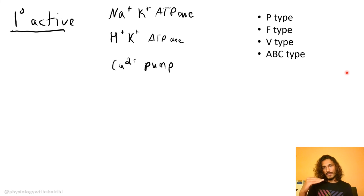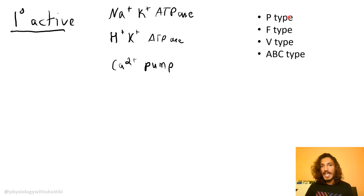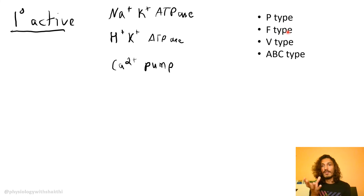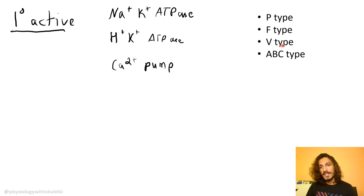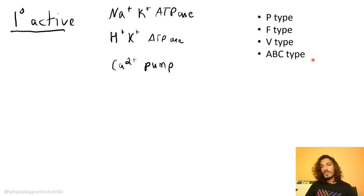For primary active transport, the most important example is sodium-potassium ATPase. Another is hydrogen-potassium ATPase — the proton pump in the stomach for acid secretion. Then there is the calcium pump, SERCA (sarcoplasmic/endoplasmic reticulum calcium ATPase). At a higher level, these channels are classified as P-type (e.g., Na/K ATPase), F-type (e.g., F₀F₁ ATP synthase in mitochondria for H+ movement), V-type (vesicular, seen in lysosomes for H+ acidification), and ABC-type — one common example being CFTR, where a defective channel results in cystic fibrosis.